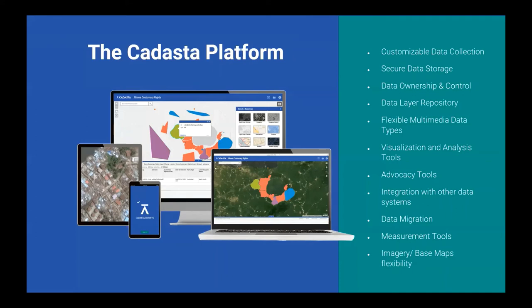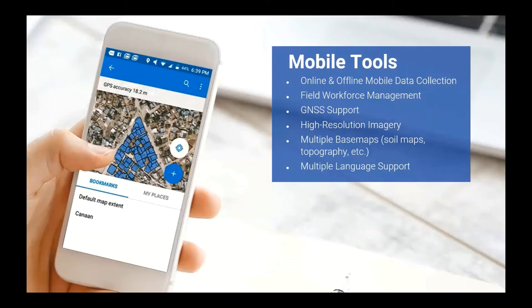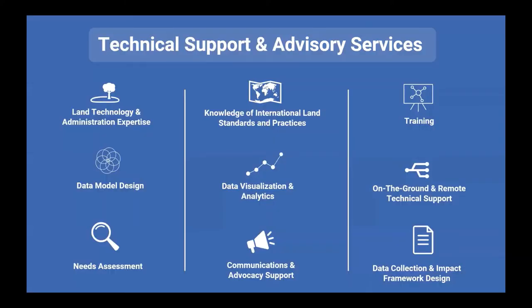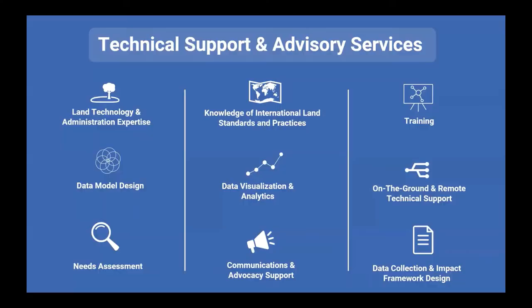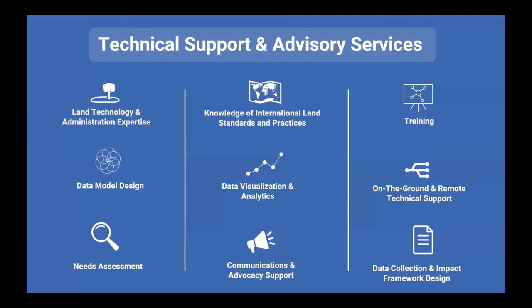Cadastra's mobile tools support online and offline field data collection, field workforce management, GNSS support to increase accuracy beyond the 5–7 meter range typical of phone GPS, high-resolution imagery download, multiple basemaps, and multiple language support including English, Swahili, and Afrikaans.